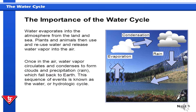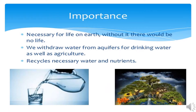Here we will study about the importance of the water cycle. Water evaporates into the atmosphere from the land and sea. Plants and animals then use and reuse water and release water vapour into the air. Once in the air, water vapour circulates and condenses to form clouds and precipitation, which is normally called rain, which falls back to the earth. This sequence of events is called the hydrologic cycle.